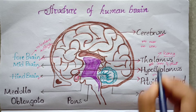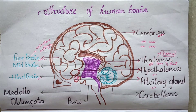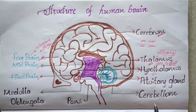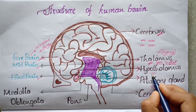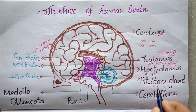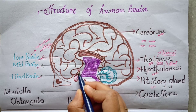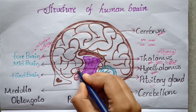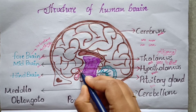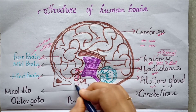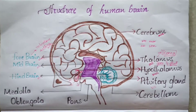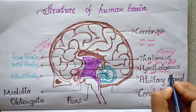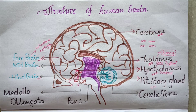The thalamus maintains consciousness and alertness. The hypothalamus is controlled by the pituitary glands, which release hormones. It also affects the body's growth.